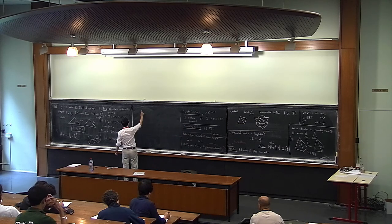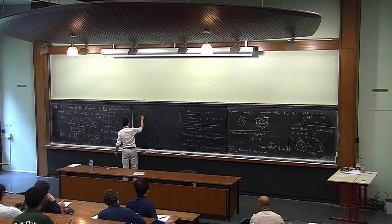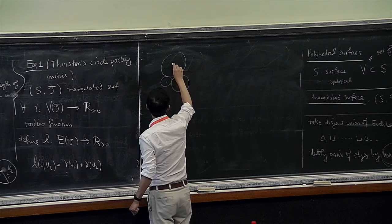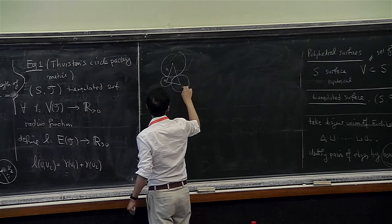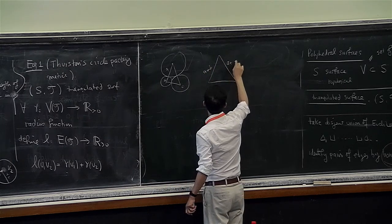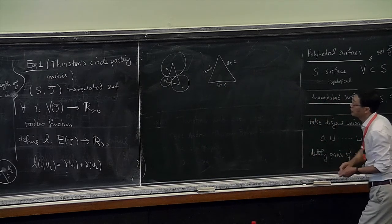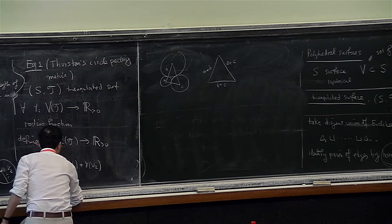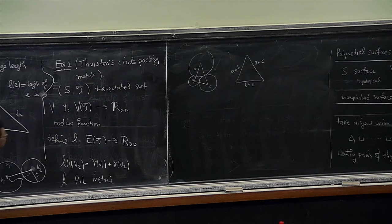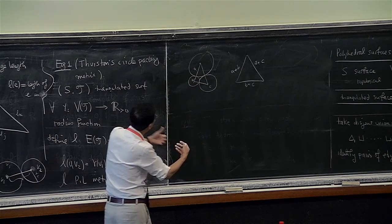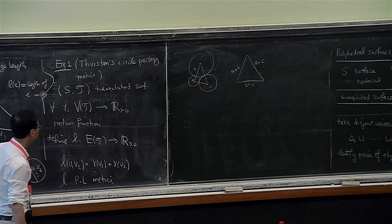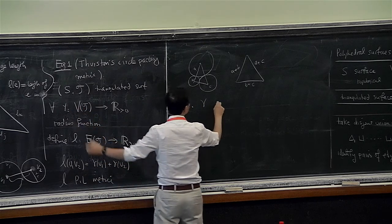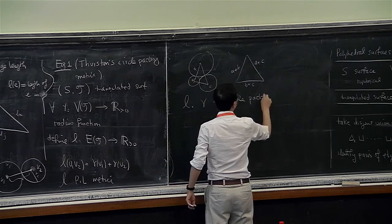It's easy to see that this assignment satisfies the triangle inequality immediately. Suppose I have a triangle in the triangulation with three vertices v1, v2, v3 and assignment of radii a, b, c. Then the lengths will be a+b, a+c, and b+c. Since a, b, c are positive, the sum of any two is bigger than the third, so L is clearly a PL metric. These metrics are called the circle packing metric because they're built from circles, forming pairwise tangent circles and declaring the length between edges to be the sum of the radii.